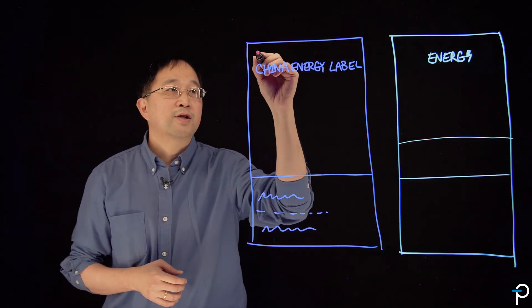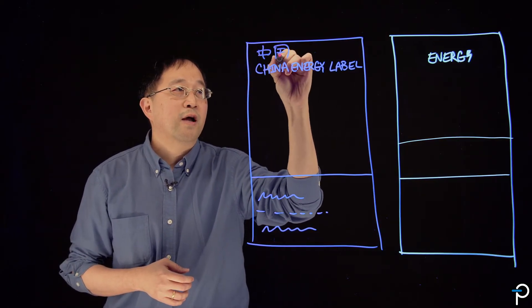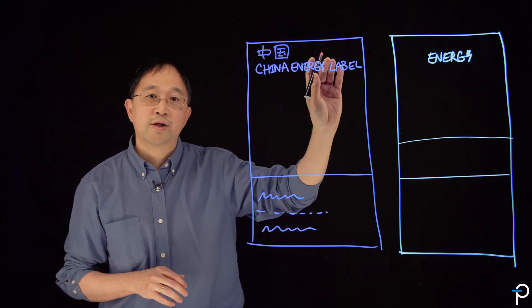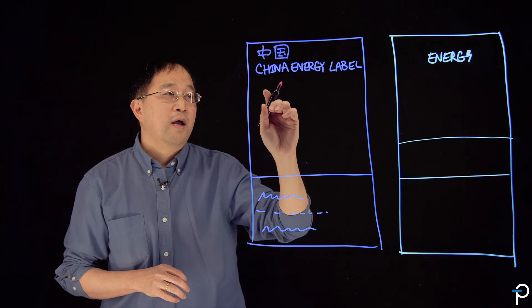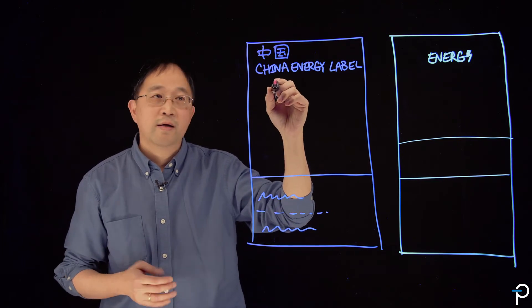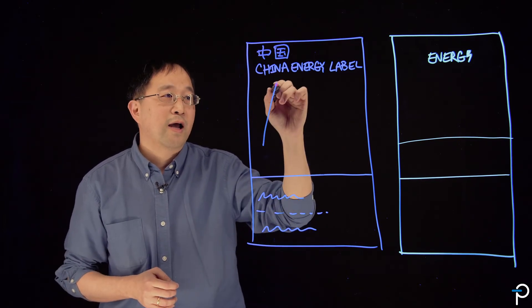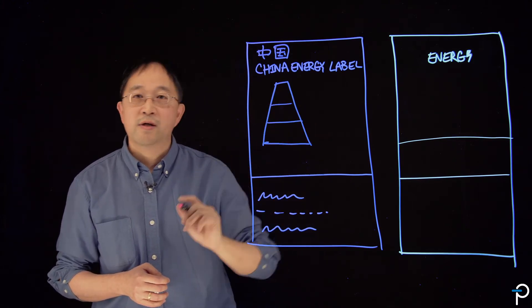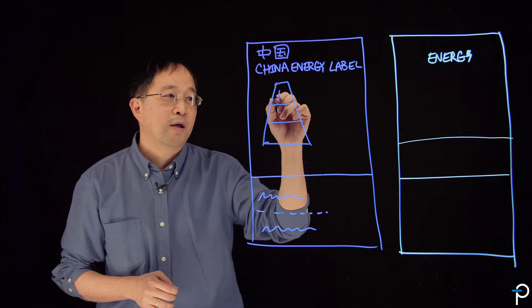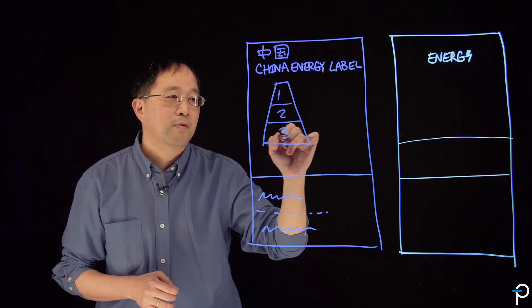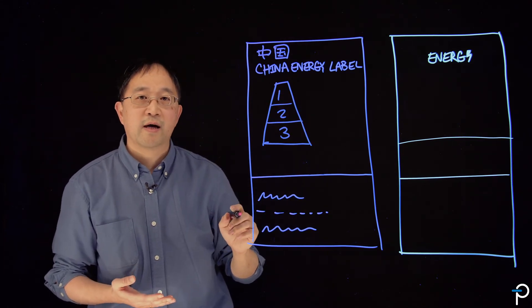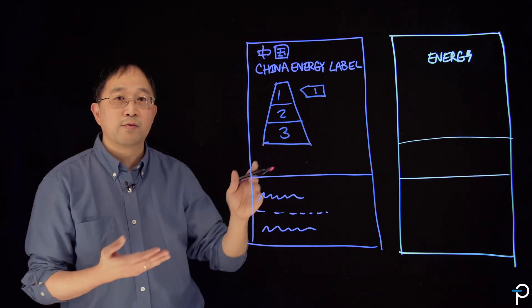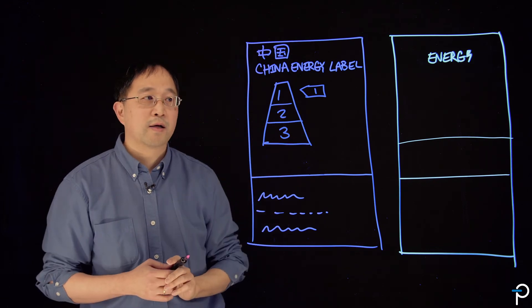When looking at the China label, of course, you'll have it marked with the China Energy Agency logo. And on top of it, when you look at the various hierarchy of products, it will be denoted through a pyramid and labeled 1, 2, 3, respectively, based on the level of performance. And of course, there will be some sort of indication as to what level this particular product meets.